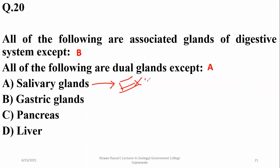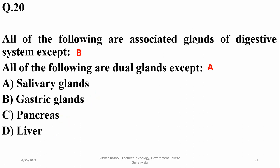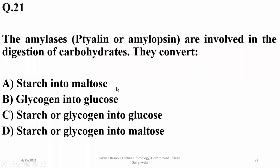All of the following are dual glands except salivary glands, because salivary glands are exocrine only, while the other glands in the list are both endocrine and exocrine. Gastric glands produce hormones as well as enzymes; the pancreas is a dual gland; and the liver produces exocrine secretions as well as some hormones. So gastric glands, pancreas, and liver are dual glands.